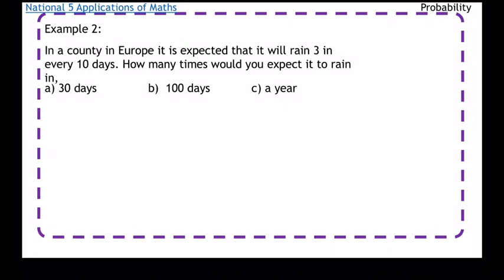In a country in Europe it's expected that it will rain 3 in every 10 days. How many times do you expect it to rain in 30 days? So the probability of it raining is 3 over 10.